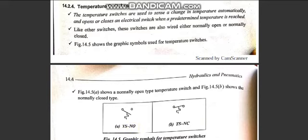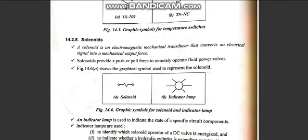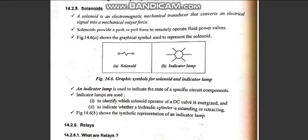Solenoid valves are electromagnetic transducers — devices that convert electrical energy into reciprocating mechanical force. The solenoid is an electromechanical transducer that converts an electrical signal into a mechanical output force. Solenoid valves are used to switch the direction control valve between position one and position two.